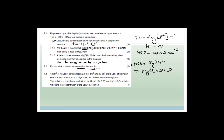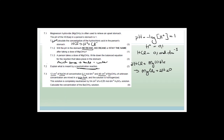Explain what is meant by a neutralization reaction. A neutralization reaction is when we balance out the hydroxide and hydrogen ions to reach chemical equilibrium. Next question: 12 cm³ of sodium hydroxide at 0.1 mol·dm⁻³ and 48 cm³ of barium hydroxide of unknown concentration are mixed in a large flask. The solution is homogenized and then completely neutralized with 54 cm³ of 0.05 mol·dm⁻³ sulfuric acid. Calculate the concentration of the barium hydroxide solution.